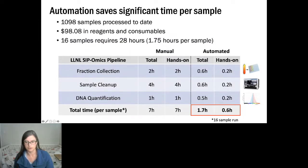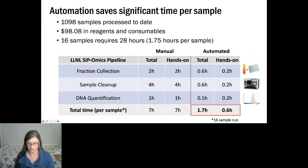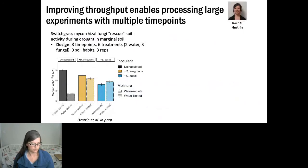In summary, this semi-automated process is about three times faster than manual fractionation and greatly reduces hands-on time. We're currently limited to 16 samples because that's what our ultracentrifuge rotor can hold. Information on the number of samples processed, reagents used, and cost per sample in reagents is also provided.